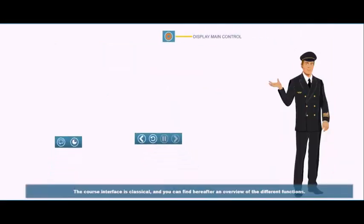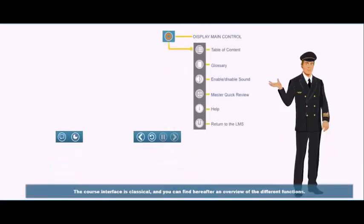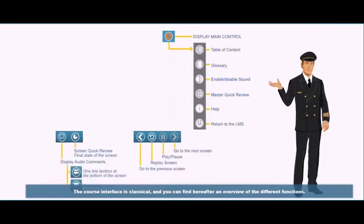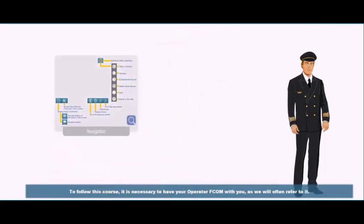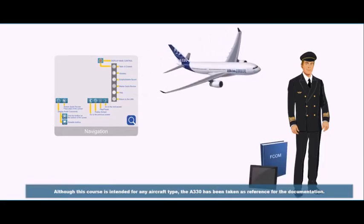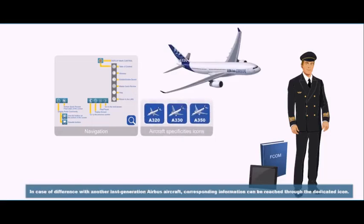The course interface is classical, and you can find hereafter an overview of the different functions. To follow this course, it is necessary to have your operator EFCOM with you, as we will often refer to it. Although this course is intended for any aircraft type, the A330 has been taken as reference for the documentation. In case of difference with another last generation Airbus aircraft, corresponding information can be reached through the dedicated icon.